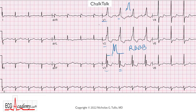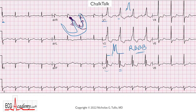Along with the rabbit ears, or RSR' in V1, V2, V3, in a right bundle branch block you expect to see a wide S-wave in the lateral leads. In a right bundle branch block, the AV node passes the signal down to the HIS bundle, and the right bundle is not working. So the signal has to go down the left bundle, activate the left ventricle normally, but then the right ventricle has to depolarize very slowly through intramyocardial cell-to-cell connections. You get this late signal headed towards the right side, away from the lateral leads — one, AVL, V5, and V6. That's why you get this negative deflection, this S-wave, and it's a little wide because it's taking a long time to get around the right ventricle.